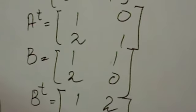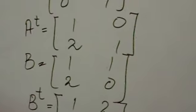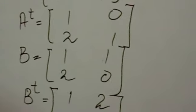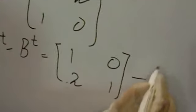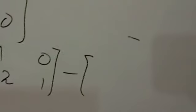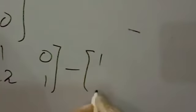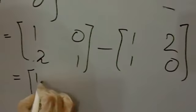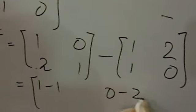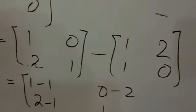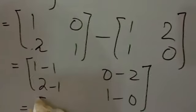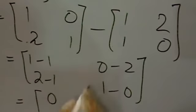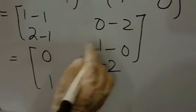Subtract B transpose from A transpose. 1 minus 1, 0 minus 2, 2 minus 1, 1 minus 0. 1 minus 1, 0. 0 minus 2, minus 2. 2 minus 1, 1. 1 minus 0, 1.